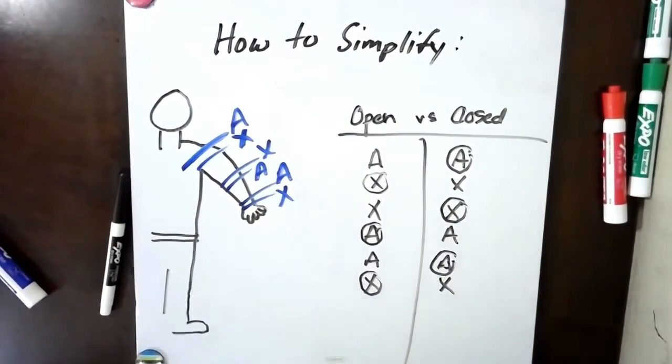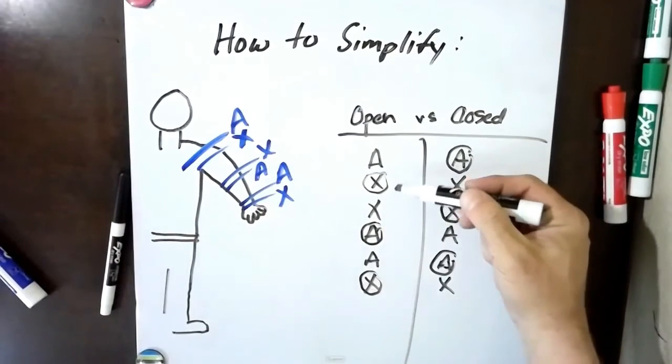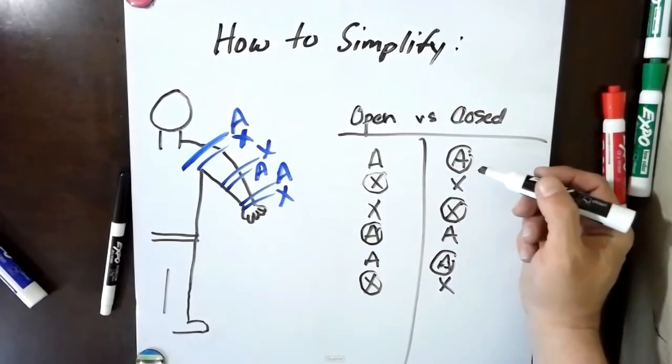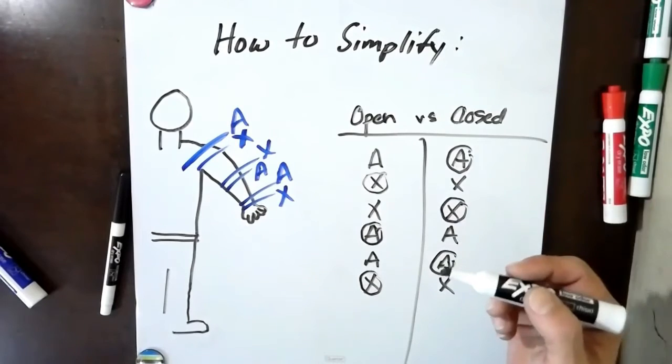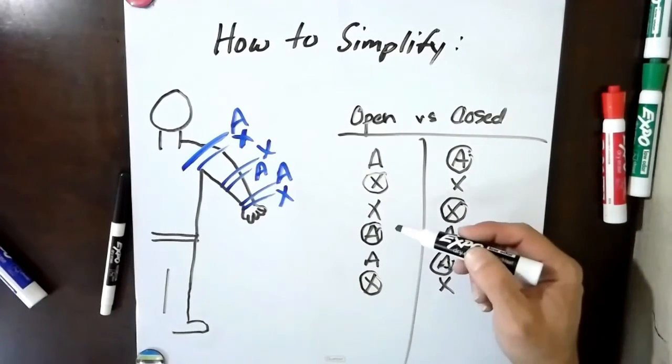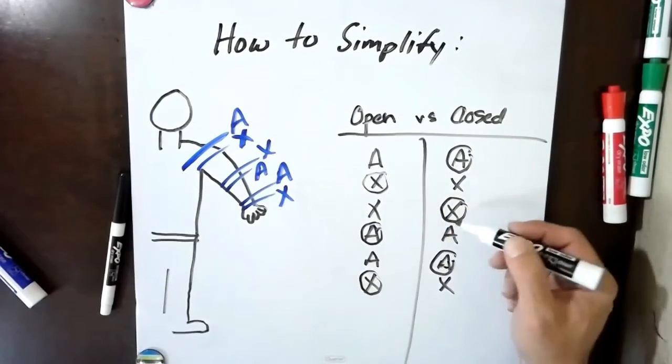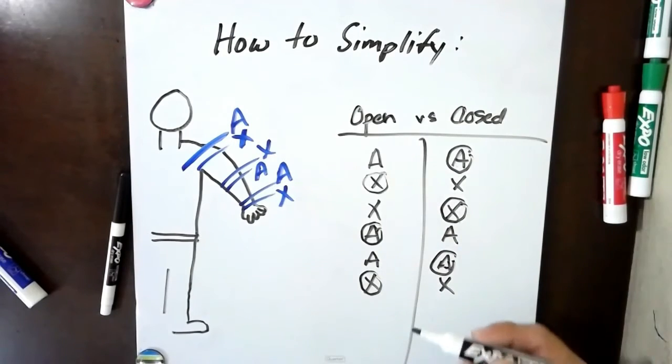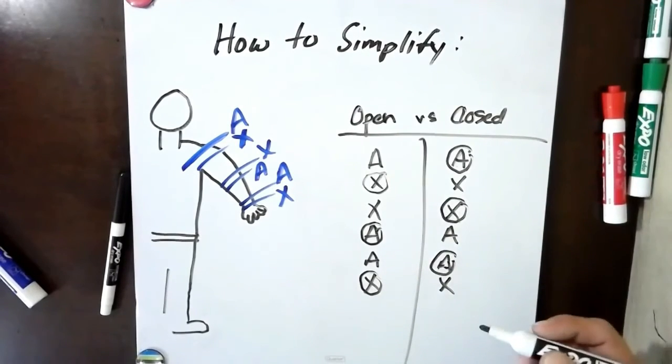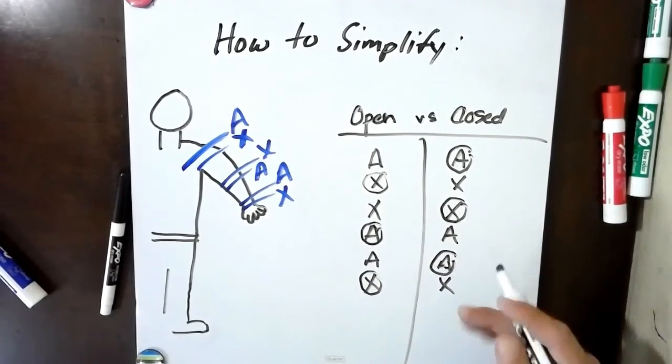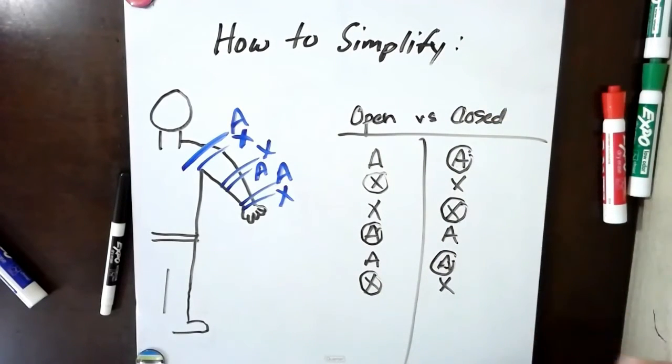So here you go: shoulder/hip open chain convex, closed chain concave. Elbow and knee open chain concave, closed chain convex. Wrist and ankle open chain convex, closed chain concave. That's how you do it.